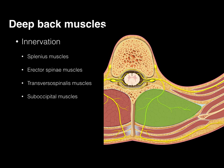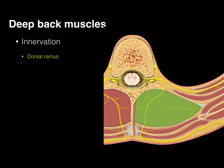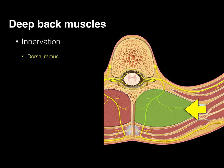The innervation of all these muscles — splenius, erector spinae, transversospinalis, and suboccipital — is through segmental innervation at every neurological level from cervical down to sacral via the dorsal rami. Every single level — C1, C2, C3, C4, T1, T2, T3, T4, L1, L2, L3, S1, S2, S3 — each of those dorsal rami segmentally innervate these deep back muscles.